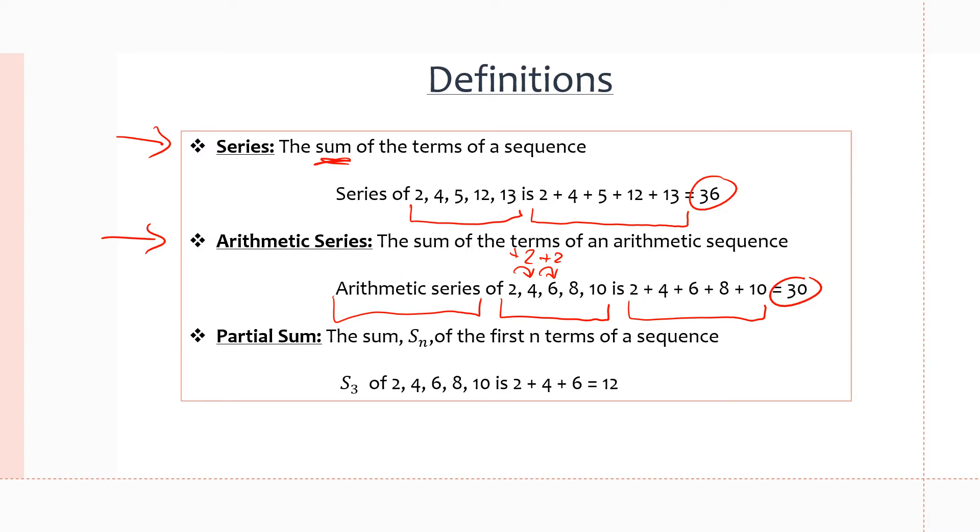And lastly, partial sum. This is the sum of the first n terms of a sequence, which is defined as S of n. So we're adding all the numbers from the first term to the nth term. So whatever that little subscript under the S is, we use it to represent the partial sum. We do S and the subscript of the term we want to go to.